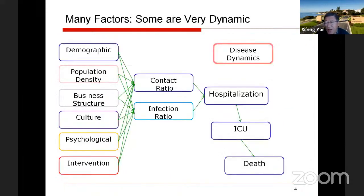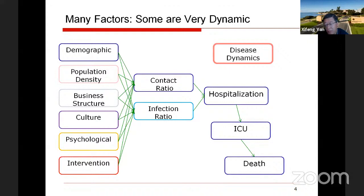There are many factors related to the number of COVID-19 cases and deaths — for example, demographic factors, population density in a county, state, or city, local business structures, social culture, psychology factors, and intervention policies. All of those factors influence the contact ratio among people and the infection ratio. These numbers in turn impact the number of hospitalizations, the number of ICU beds used for COVID-19 patients, and ultimately the number of deaths. Furthermore, all of these numbers are influenced by the disease dynamics, as COVID-19 evolves dynamically.